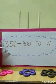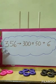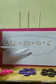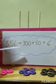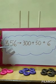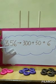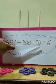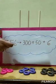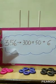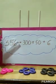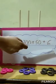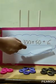As 3 is in the 100's place, its value becomes 300. And 5 is at the 10's place, so its value becomes 50. And 6 is at the 1's place, so its value is 6.